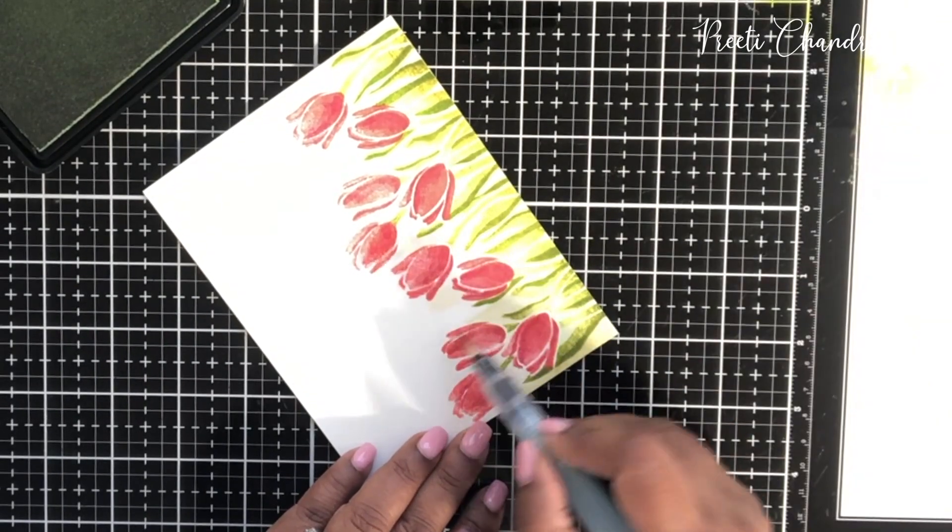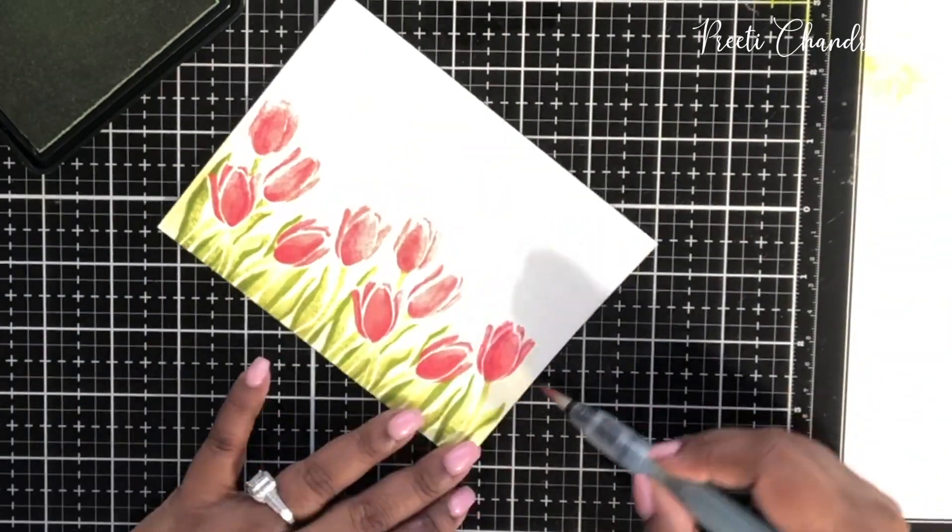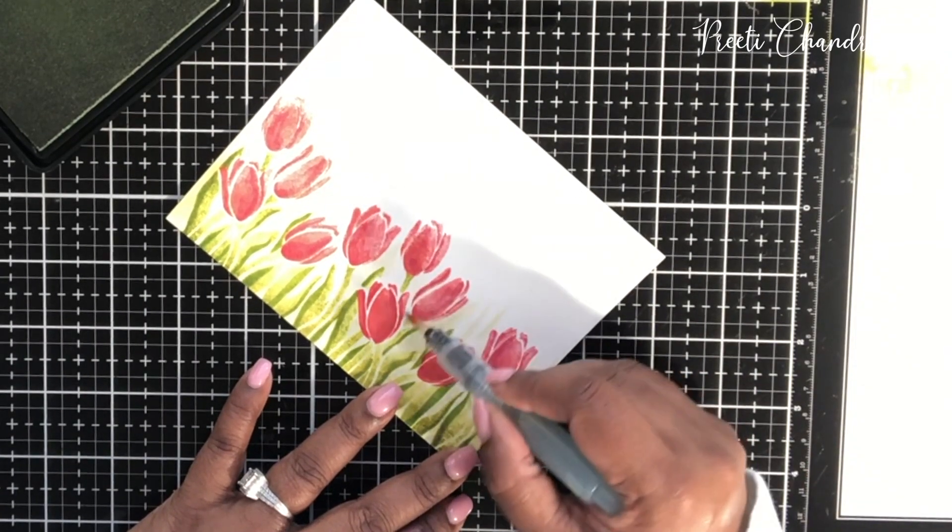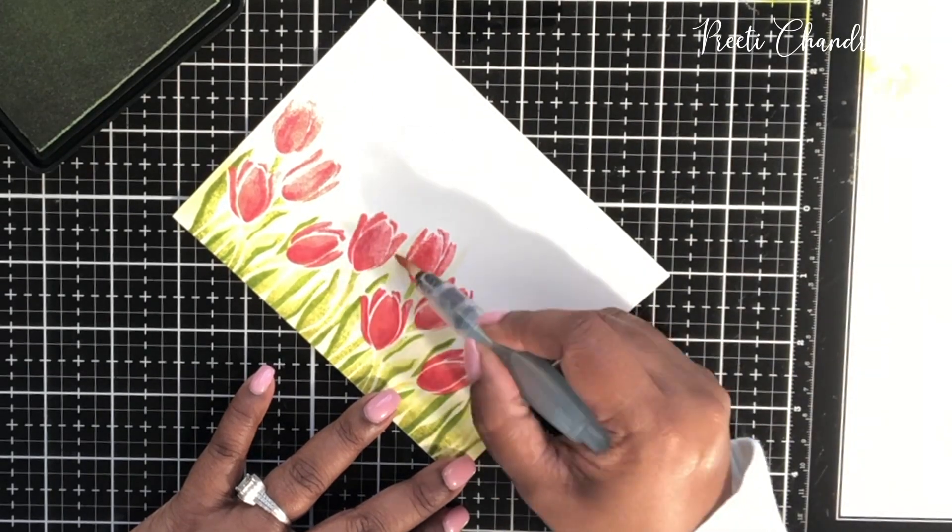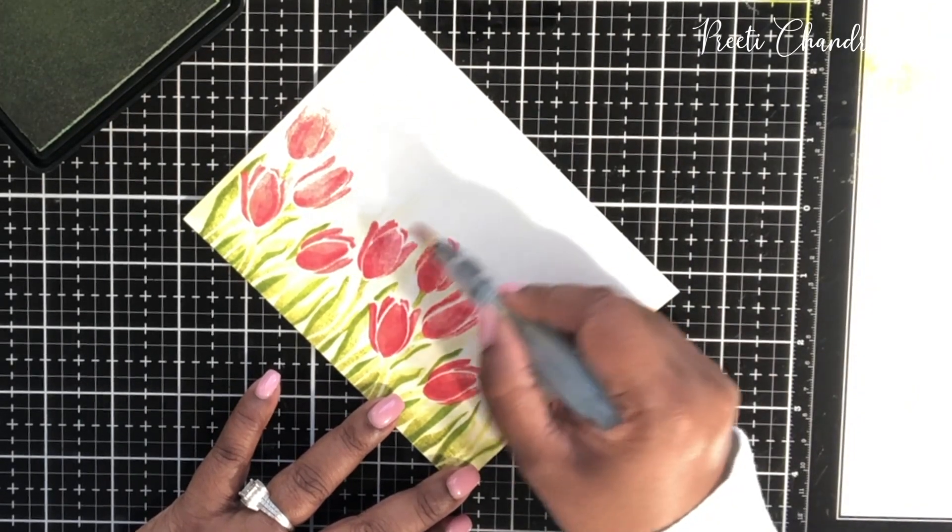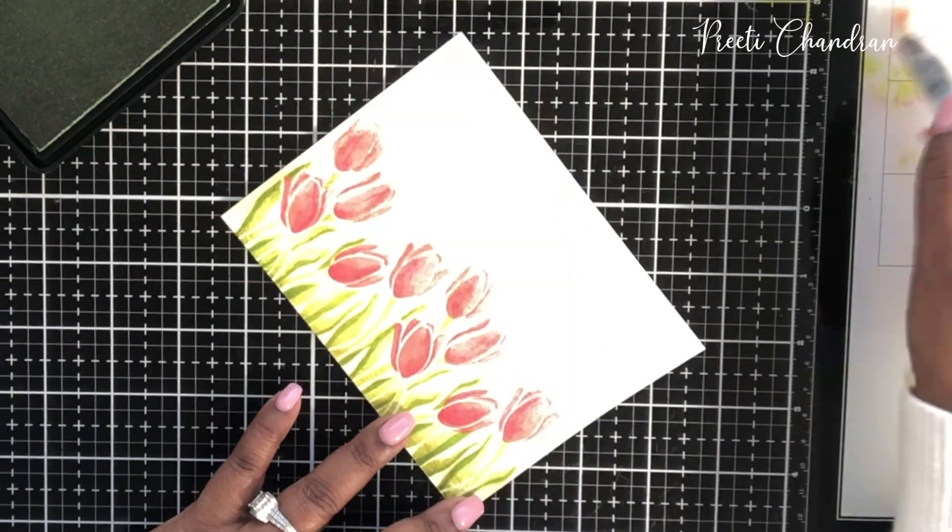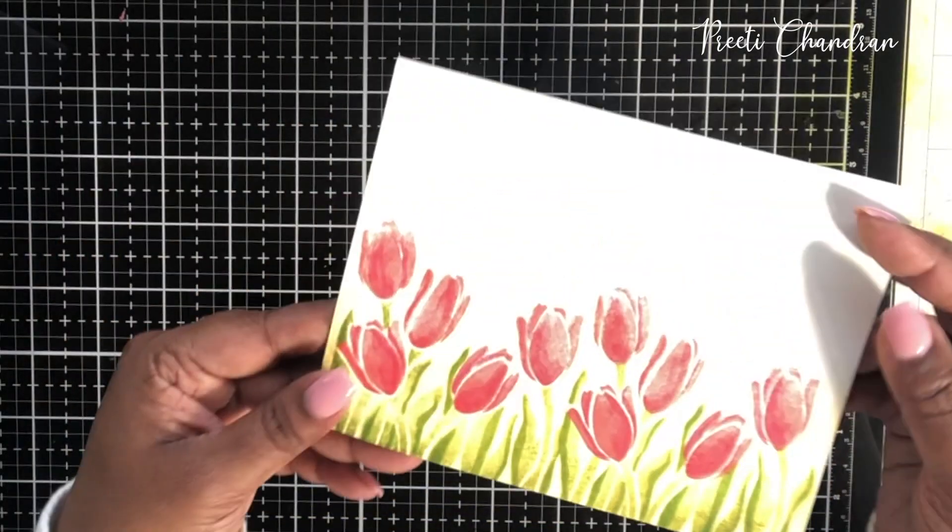Making it look like these tulips are a part of a meadow where there are other grass and other things in the far background. Obviously, they don't have to be super bright. They just have to just, a hint. It's more like a hint that there's something in the background.